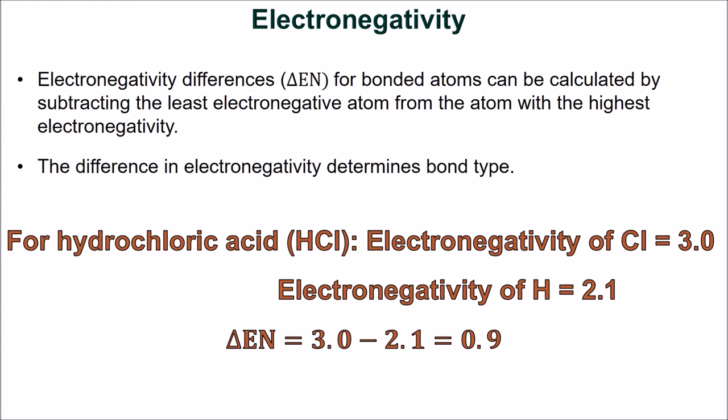The electronegativity of an atom can be found on some periodic tables in chemistry textbooks or in chemical constant databases. The difference in electronegativity dictates what type of bond is present in the compound. The electronegativity difference for hydrochloric acid is determined by subtracting the electronegativity value of the hydrogen atom, 2.1, from the electronegativity of a chlorine atom, 3.0. This gives hydrochloric acid an electronegativity difference of 0.9. We will learn later how this difference correlates to different bond types.